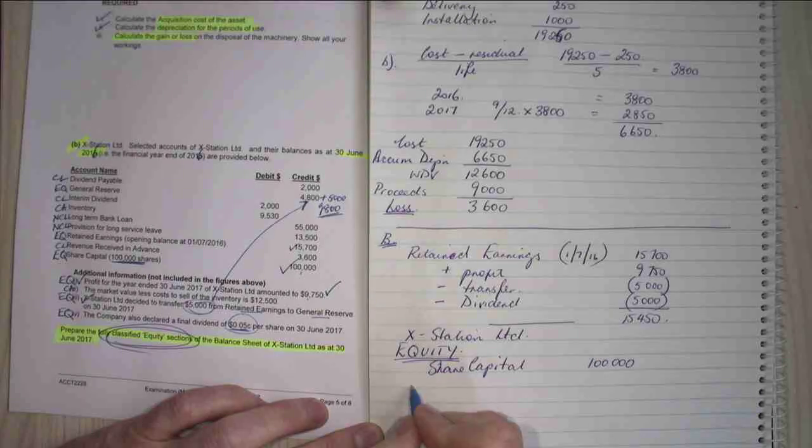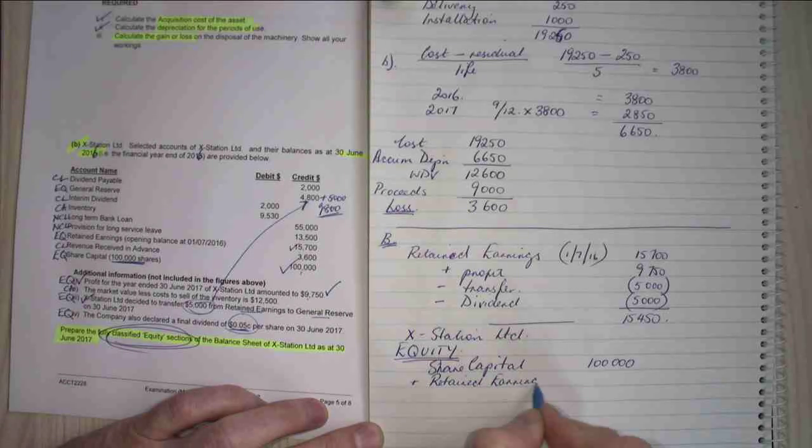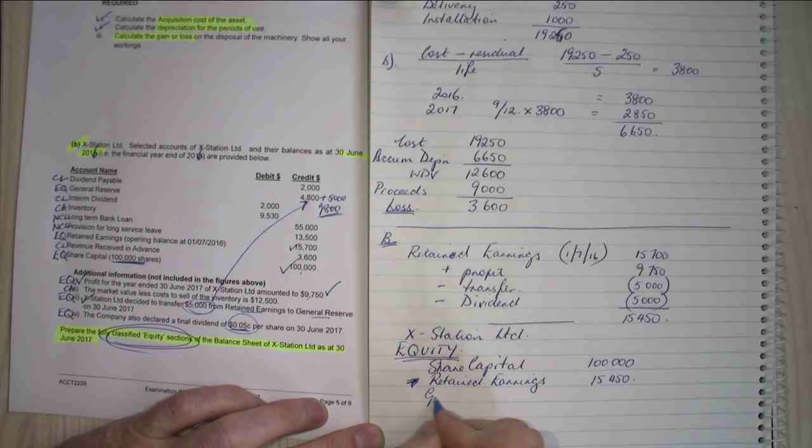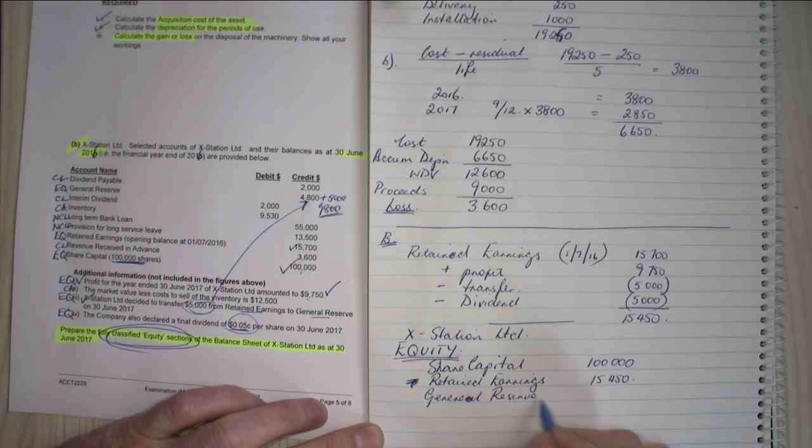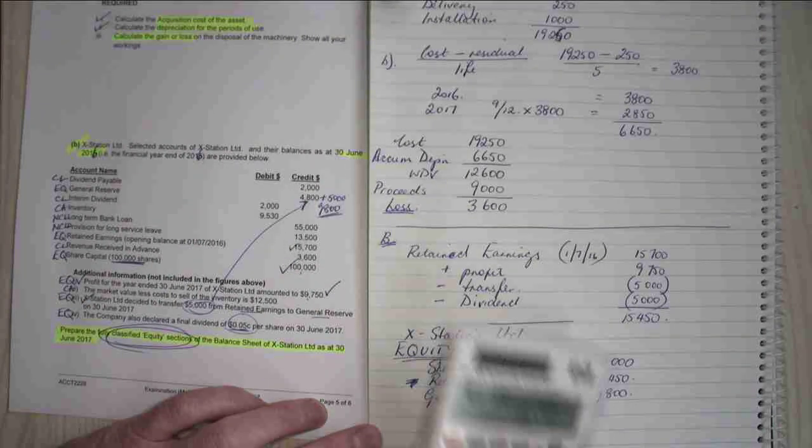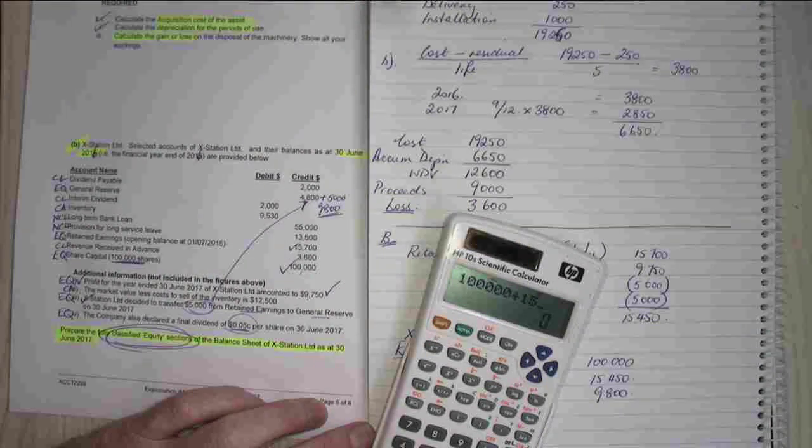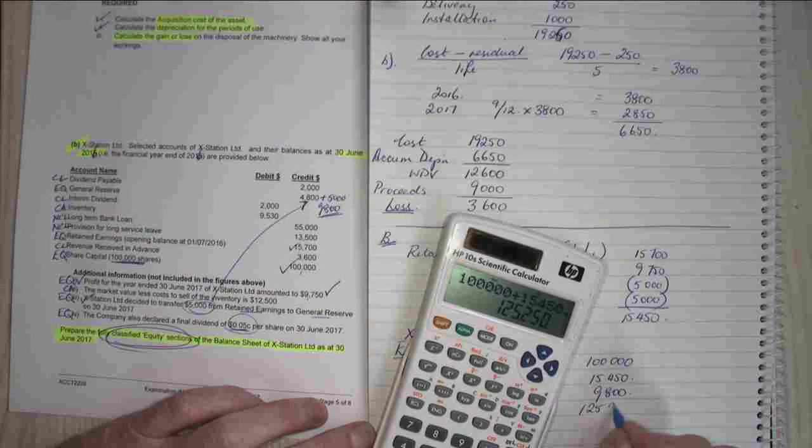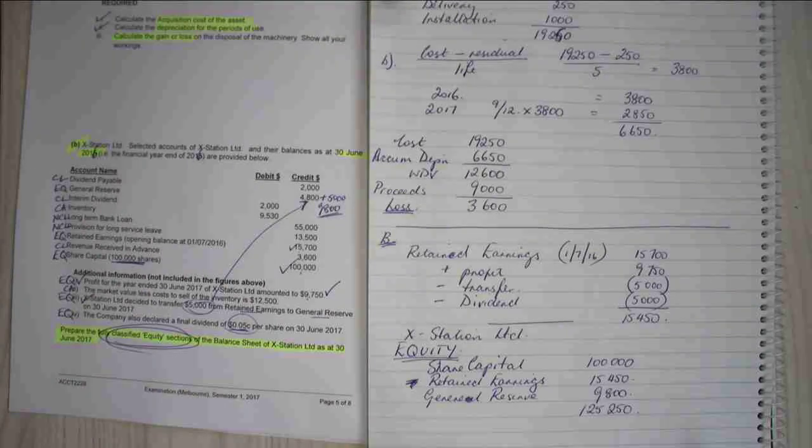The next thing I'm going to put into my retained earnings. So I'm going to add in retained earnings, which is $15,450. And then my general reserve, which we calculated doing $9,800. Let's add all those up: $100,000 plus $15,450 plus $9,800 equals $125,250. And there's my equity balance.